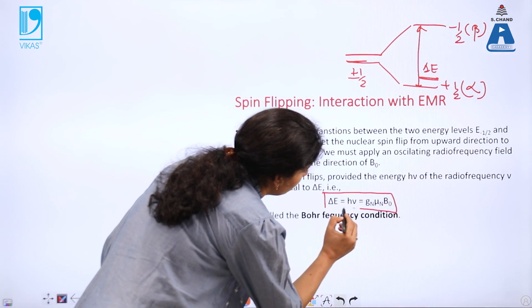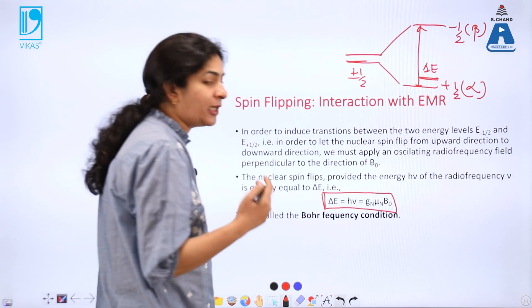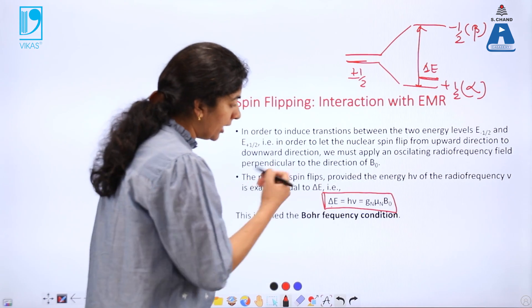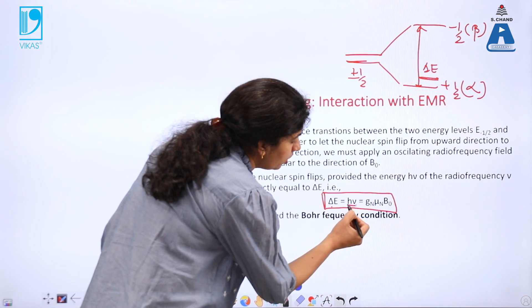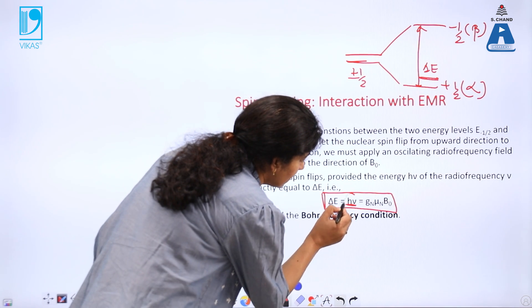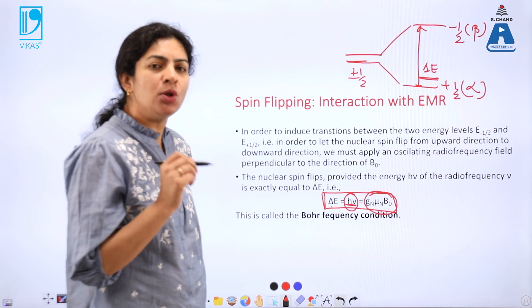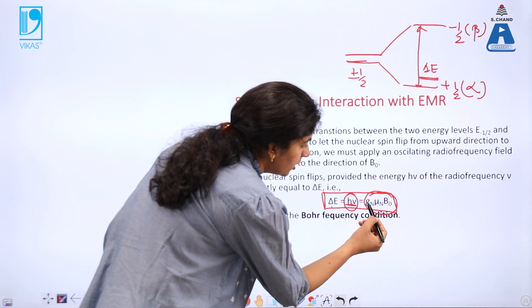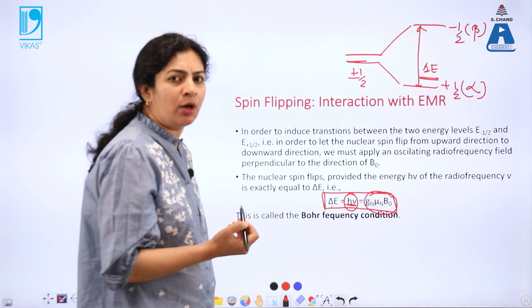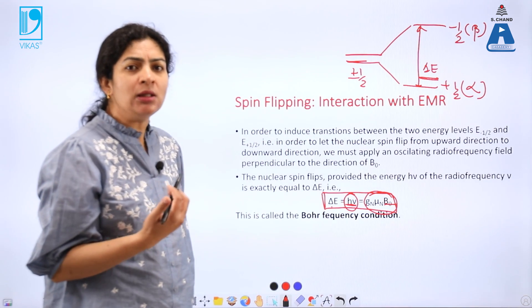This is the quantitative expression for the energy gap. In order to undergo absorption, this energy gap should equal the energy of the electromagnetic radiation: delta E equals h-nu, where h is Planck's constant and nu is the frequency of the electromagnetic radiation. This expression is due to the intrinsic property of the nuclei. The gap delta E is numerically equal to Gn times mu-n times B-naught, where Gn is the nuclear G-factor, mu-n is the magnetic moment of the nucleus, and B-naught is the strength of the external magnetic field.